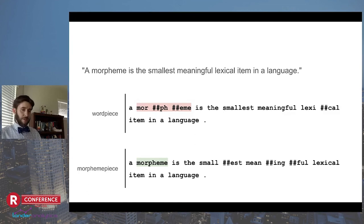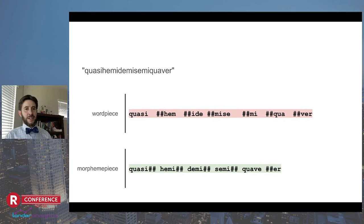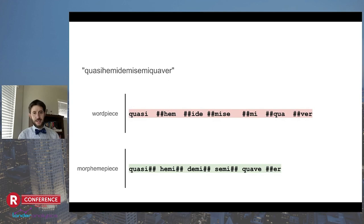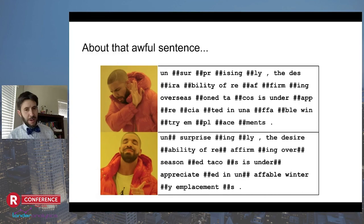One more example — one of the things I really enjoyed about this project was finding obscure, unusual words. The word 'quasihemidemisemiquaver' is actually a real word. My kids really enjoy saying this word now. Morpheme piece breaks it up into the most meaningful pieces: quasi, hemi, demi, semi, quaver. I'll let you guess what this word means if you don't already know. Just to close the loop — that abomination of a sentence I constructed earlier is still an abomination, but at least with morpheme piece it's a meaningful abomination. You can see how morpheme piece breaks it into meaningful tokens and you can at least parse what each word means.